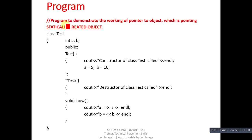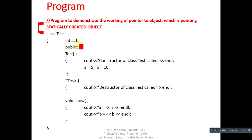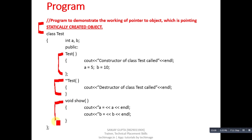I am now explaining a program to demonstrate the working of a pointer to a statically created object. First I will create a static object, then later demonstrate dynamic objects using new and delete. The class is named 'test' with two attributes a and b. Inside public, there is a default constructor assigning 5 to a and 10 to b, a destructor printing a message on the console, and a show method printing values of a and b.